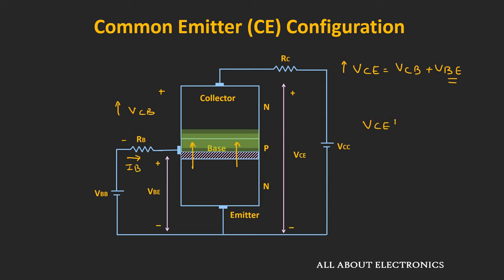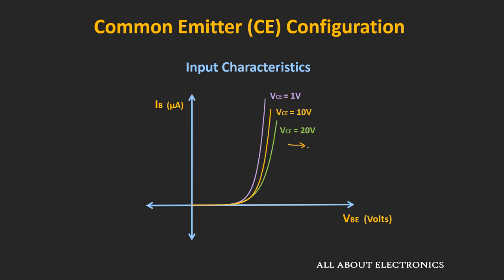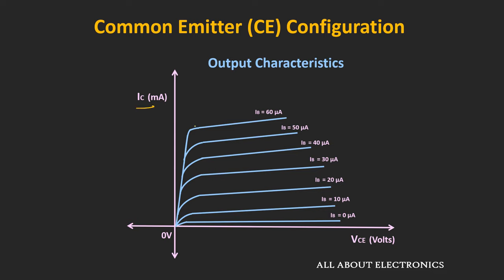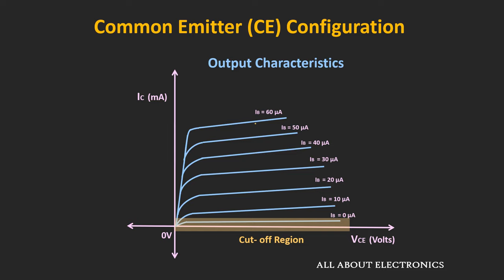So we can say that as the value of Vce increases, the base current Ib will reduce, which explains the shape of the input characteristic curves. Now let's see the output characteristics. This output characteristic shows the relationship between the collector current Ic and the voltage Vce. The different Ic vs Vce curves are shown for different values of base current. This curve can be divided into three regions: the active region, the saturation region, and the cutoff region. In the active region, as the base current Ib increases, the collector current Ic also increases. But here, unlike the common base configuration, as the value of Vce increases, the collector current Ic also increases — meaning these collector curves are not totally horizontal.